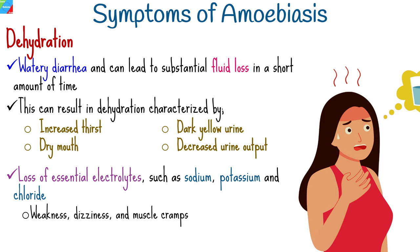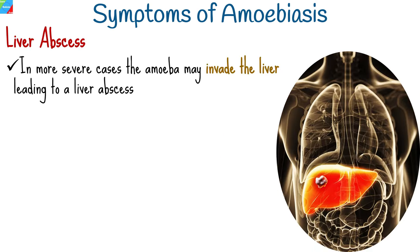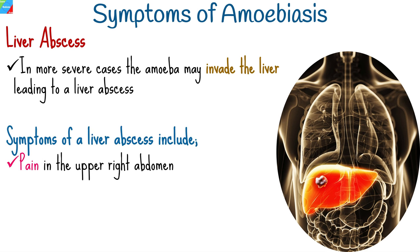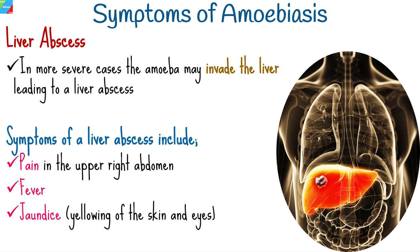In more severe cases, the amoeba may invade the liver, leading to a liver abscess. Symptoms of a liver abscess can include pain in the upper right abdomen, fever, and jaundice, which is yellowing of the skin and eyes.